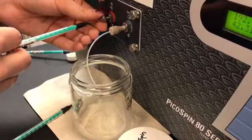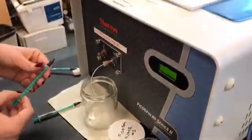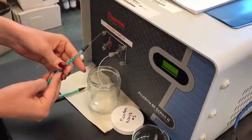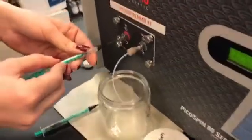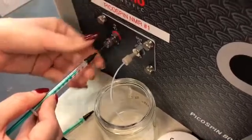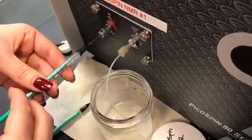Again, loosen the screw, and this time again, we're going to inject air. So, draw up 0.4 milliliters of air into the syringe, insert the syringe until it stops, tighten the screw, and slowly inject the air.